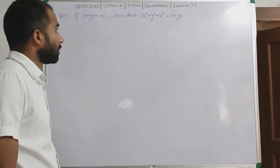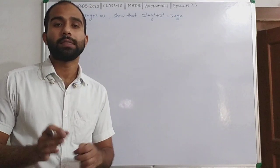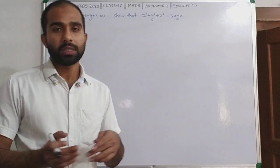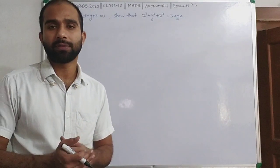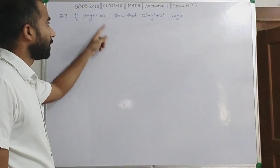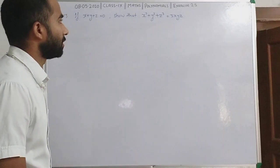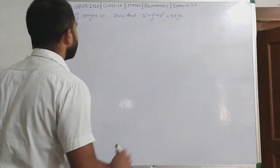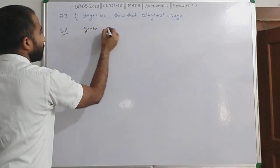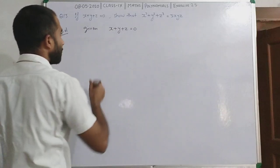Now this is question number 13 of exercise 2.5. Question number 12 मैंने आपके लिए छोड़ा है — उसमें right hand side को simplify करना है, जब आप simplify करते जाएंगे तो left hand side के बराबर आ जाएगा. Question number 13: if x plus y plus z is equal to 0, show that x³ plus y³ plus z³ is equal to 3xyz. Given: x plus y plus z is equal to 0.